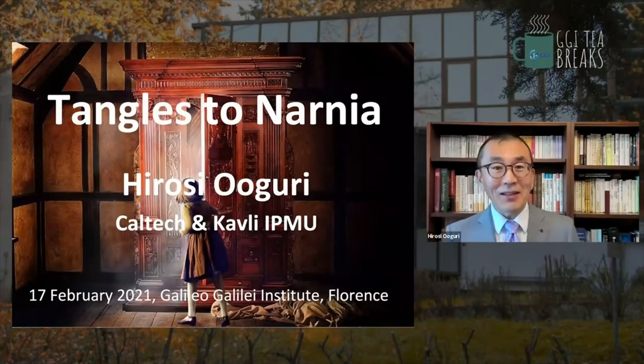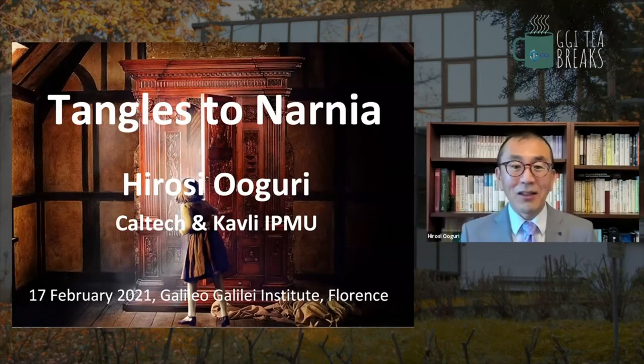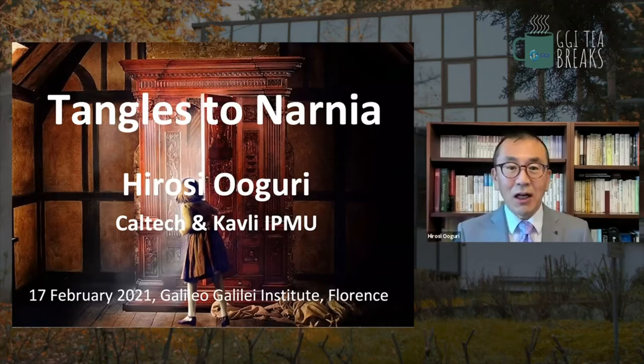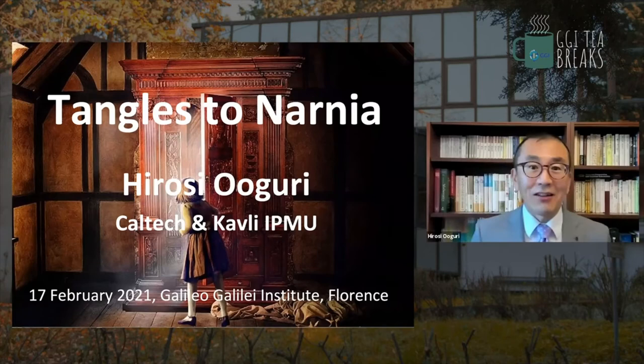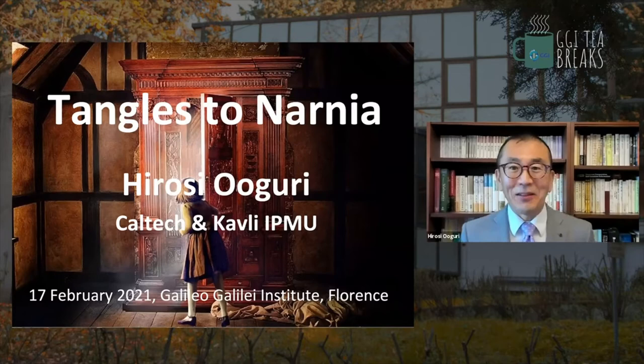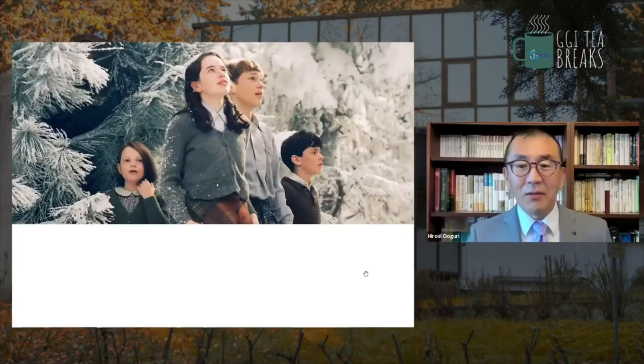Thank you for a very generous introduction. I'm very happy to be back to GGI, even virtually, and meet all of you. The title of my talk is Tangled to Narnia, and there are two reasons for this title. One has to do with the second half of my talk, and another is that I learned that Narnia is actually named after an Italian town about 200 kilometers south of Florence, between Assisi and Rome in Umbria. C.S. Lewis learned about the name as a child and decided to name his imaginary country after this town.